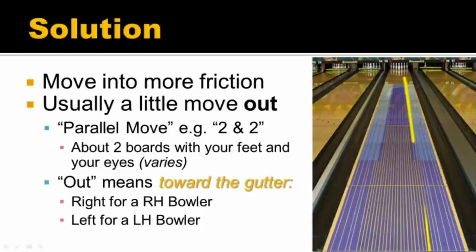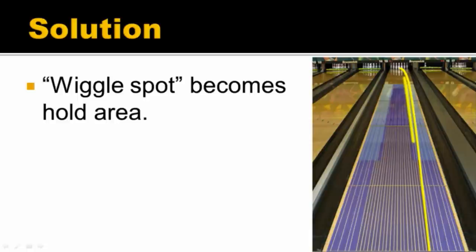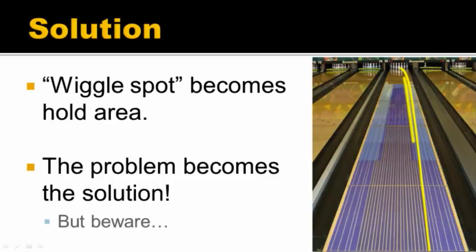The solution to carry down — the pattern is a little bit longer there — is that we want to move into a little bit more friction. You can see the little yellow ball track line drawn outside where that bit of oil is now. That's a little parallel move — a 'two and two' — meaning you're moving two boards with your feet and two boards with your eyes. That will vary from house to house. When I say out, I mean towards the outside of the lane, towards the gutter. For a right-handed bowler, that means moving to the right; for a left-handed bowler, moving to the left. That little wiggle spot has now become a bit of a hole area — that problem has become a solution.